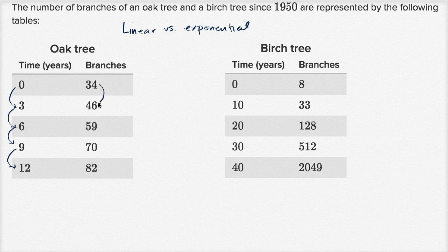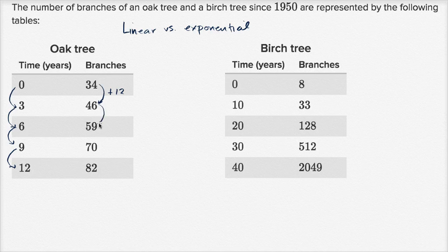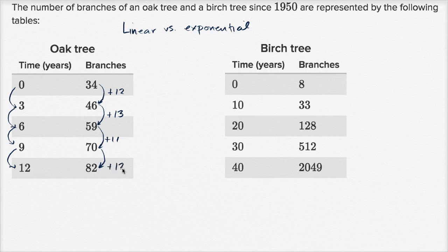So what am I talking about? 34 to 46, that is plus 12. 46 to 59 is plus 13. 59 to 70 is plus 11. 70 to 82 is plus 12. And so at first you think, well, this isn't an exactly fixed change. These numbers, they seem to average right around 12.